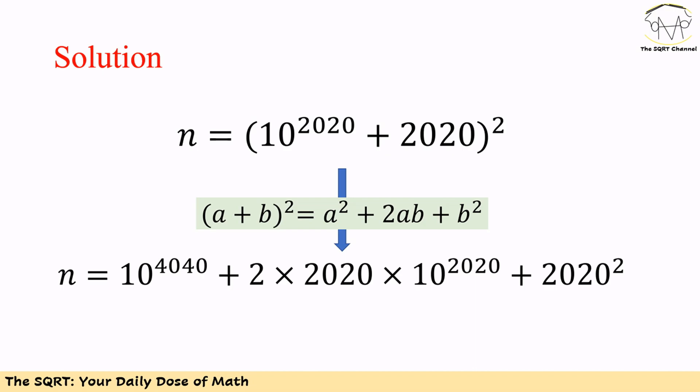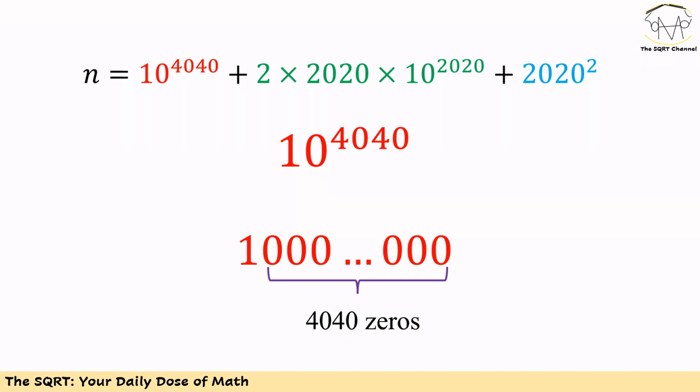Now we have three terms for n. We're going to evaluate each term separately. The first term is 10^4040. Obviously, the value of 10^4040 is 1 followed by 4040 zeros.